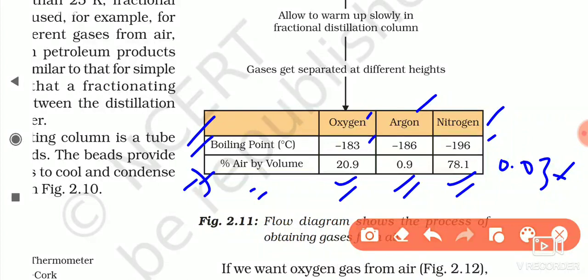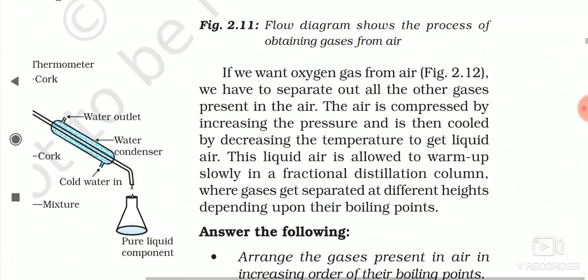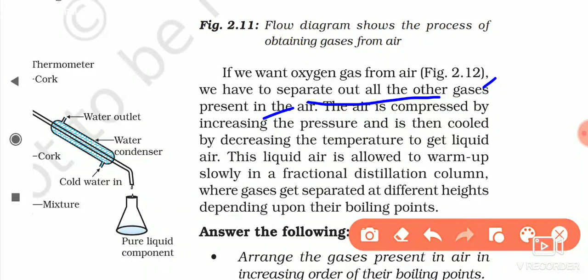If we want to obtain oxygen from air, we have to separate out all the other gases first, because oxygen has a higher boiling point than the other gases. So first we get the other gases, and after they are all separated out, we collect oxygen.